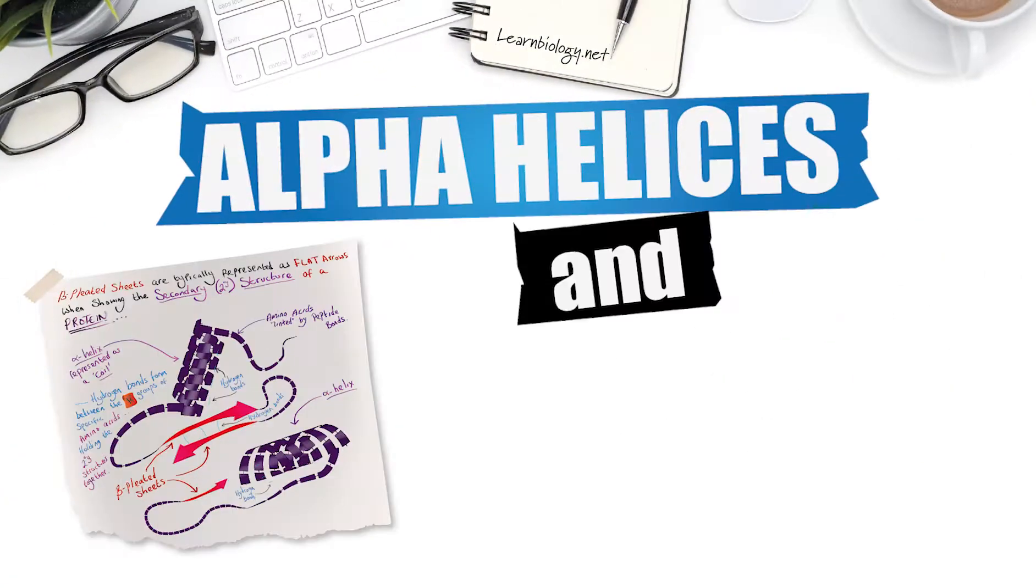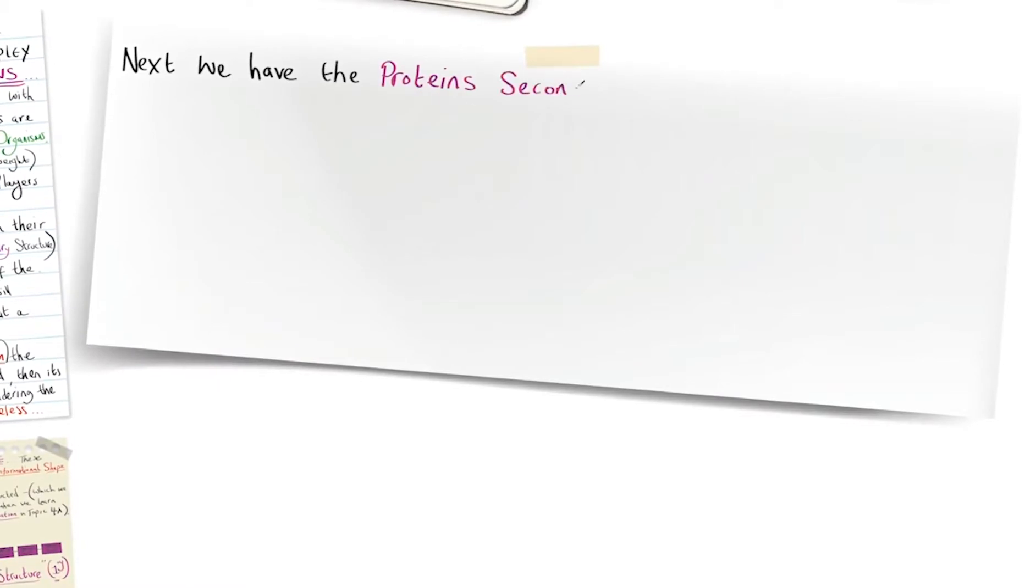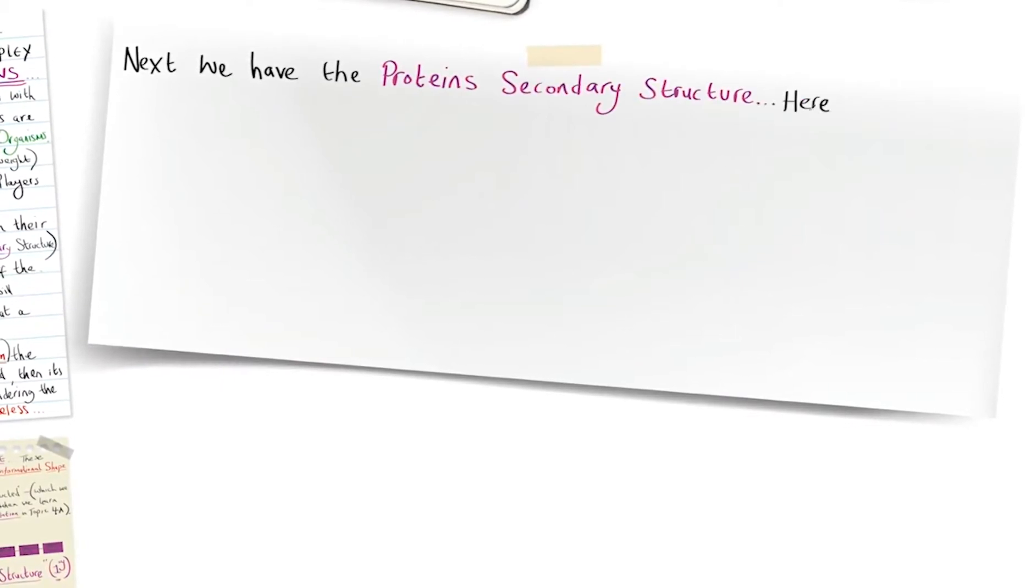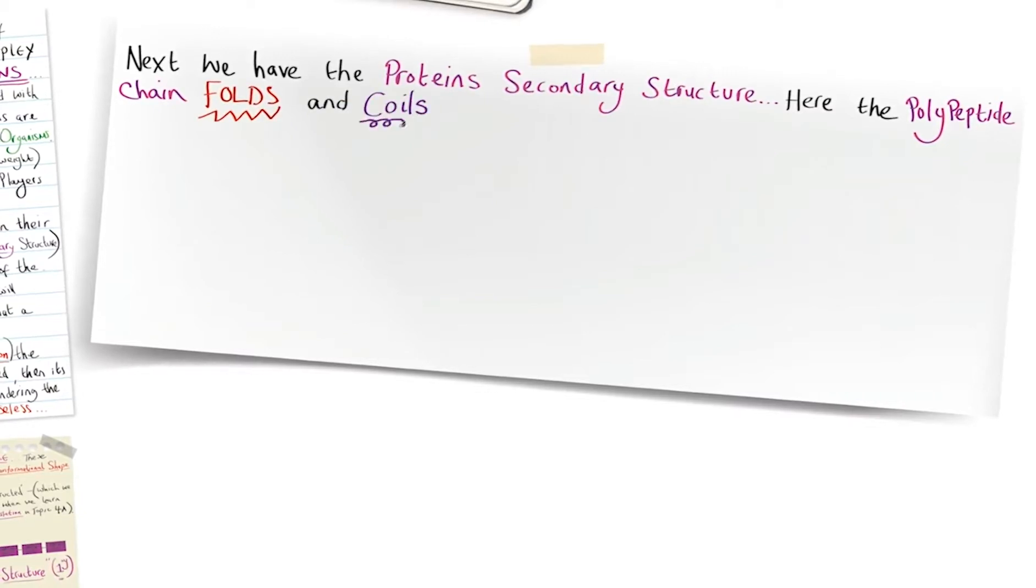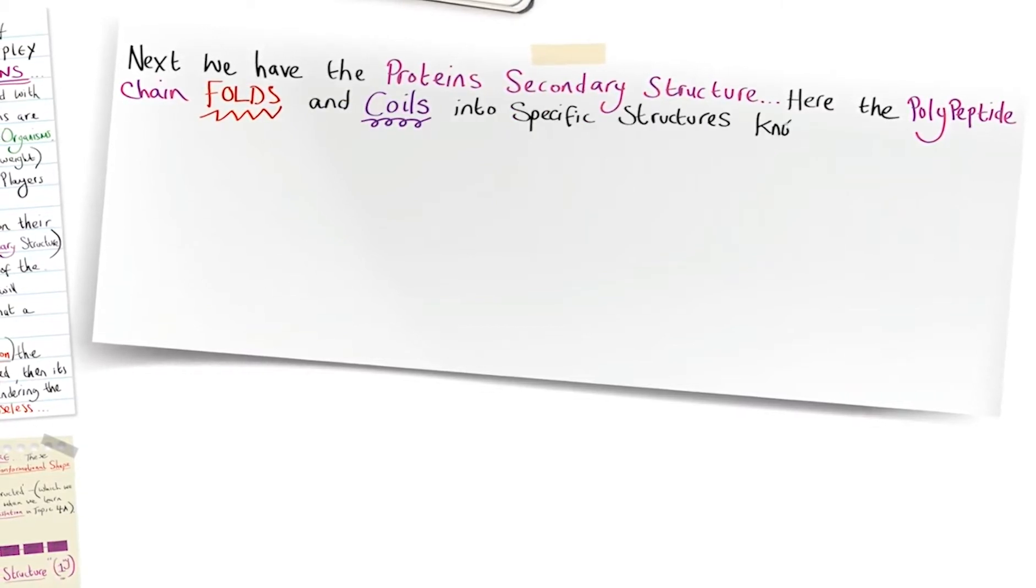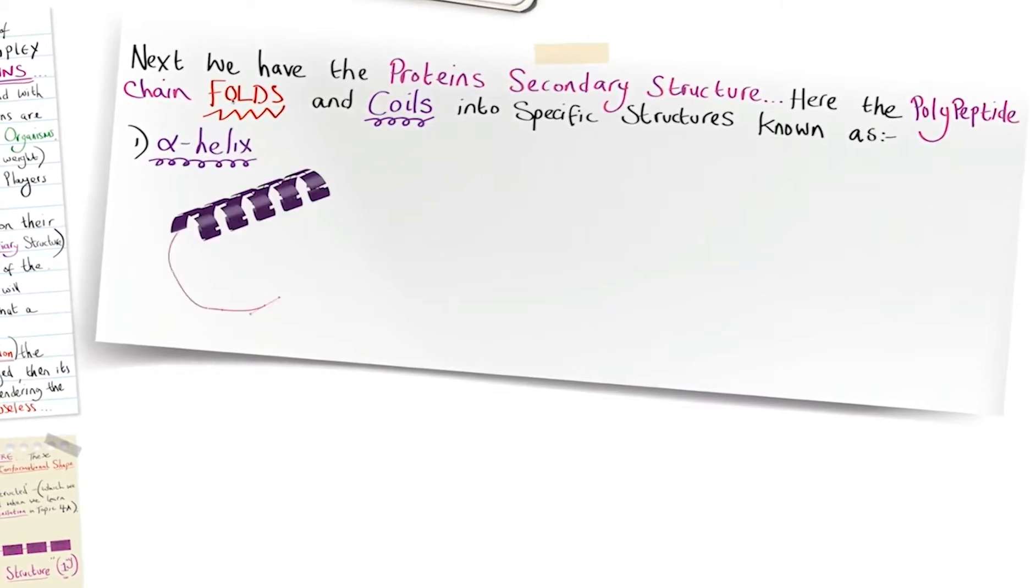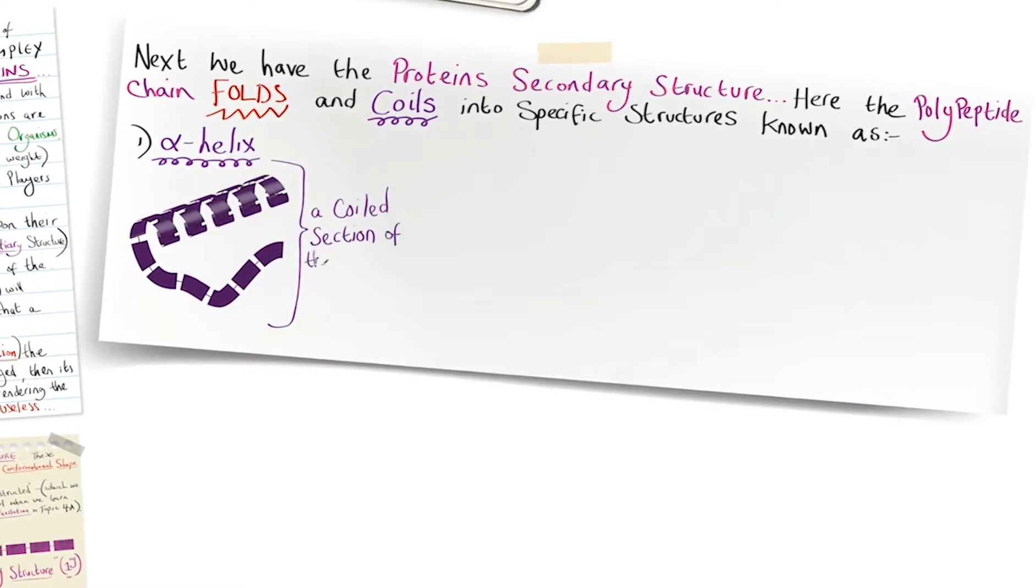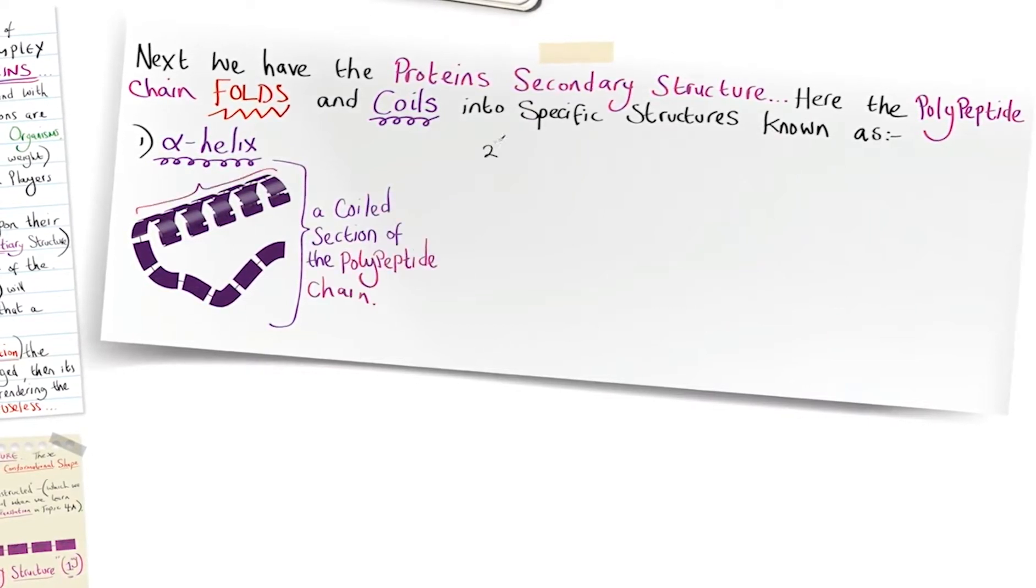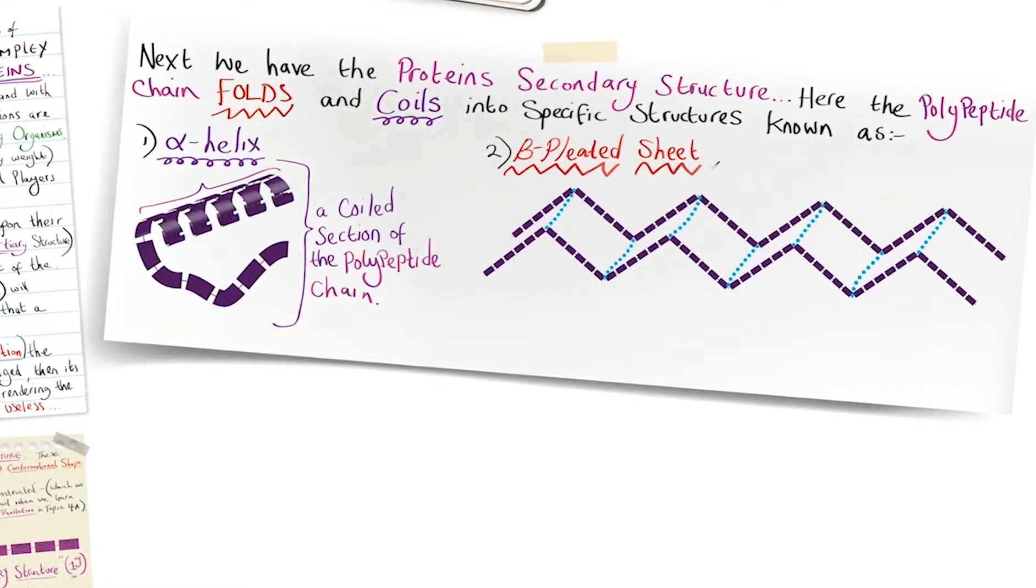Here you'll learn about alpha helices and beta pleated sheets. In the protein's secondary structure, the polypeptide chain folds and coils into specific structures. Number one is the alpha helix, essentially a coiled section of the polypeptide chain. Number two is the beta pleated sheet, which is a folded section of the polypeptide chain.